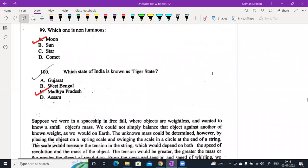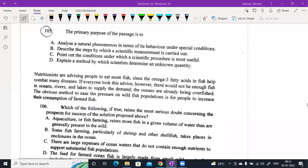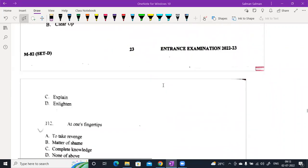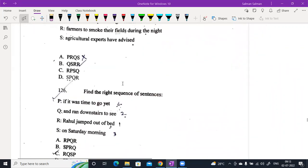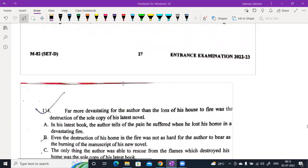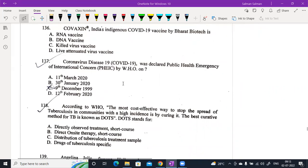This is our 100 questions. After that, the question of health and environment awareness. It is from 136. Co-vaccine, Indian indigenous vaccine by Bharat Biotech. What technique is this? It is killed inactivated virus vaccine. 137. Corona disease 19, COVID-19 was declared public health emergency of international concern by WHO on 30th January 2020.